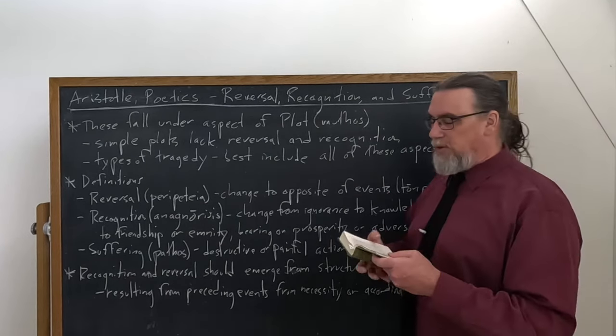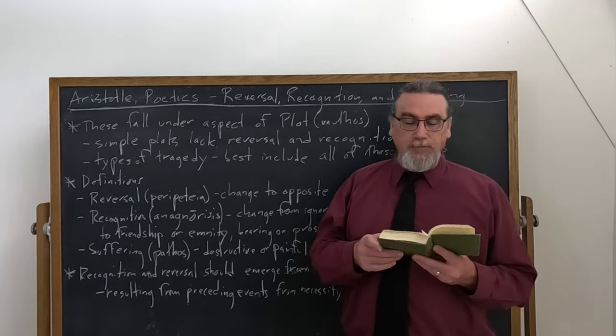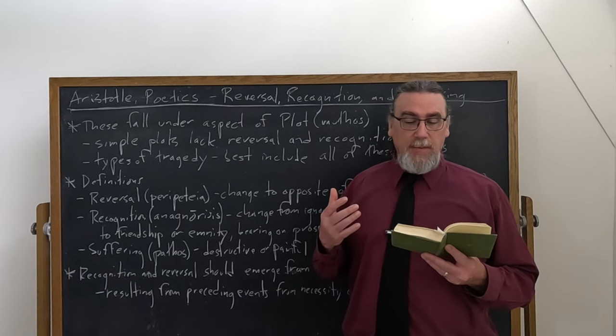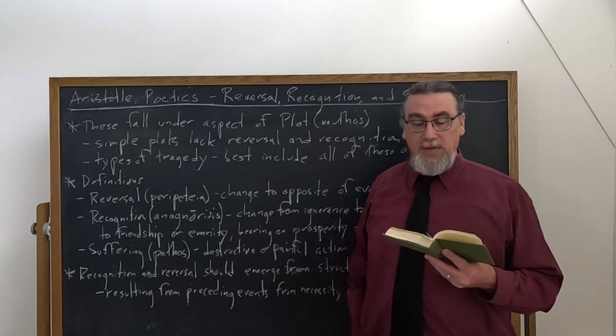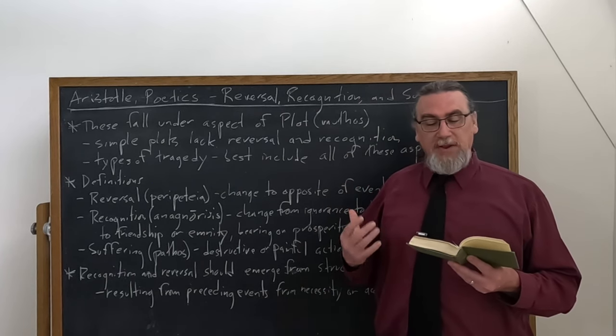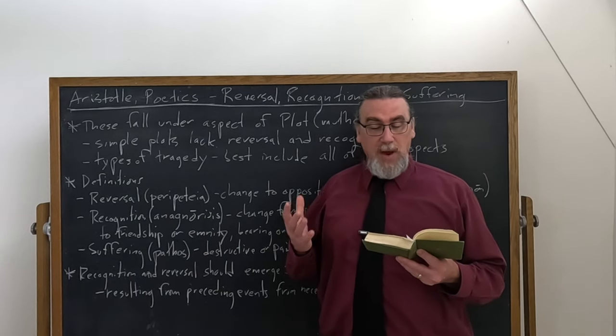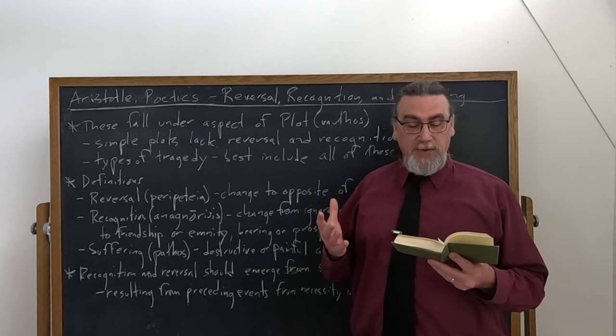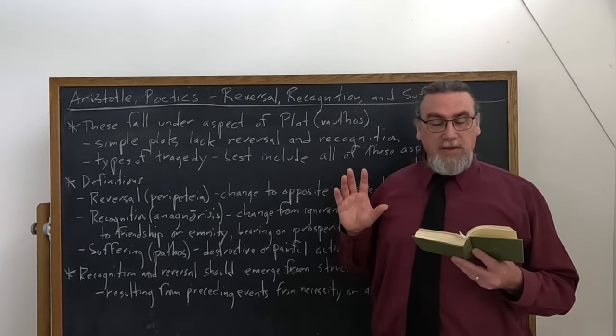So that gives you an idea about what the suffering aspect is. Let's come back to the reversal. So what are examples of reversals? What happens in them? So he says, for example, in the Oedipus, the person who comes to bring Oedipus happiness and intends to rid him of his fear about his mother, he affects the opposite by revealing Oedipus' true identity.